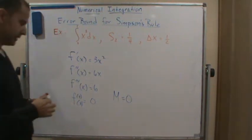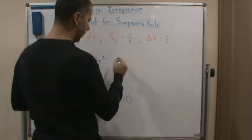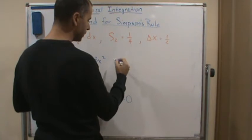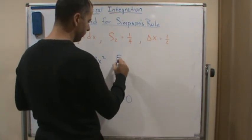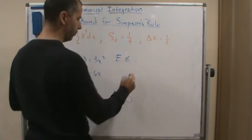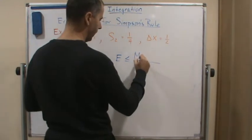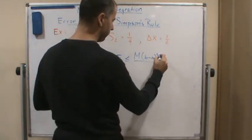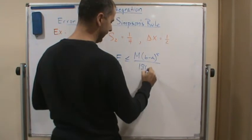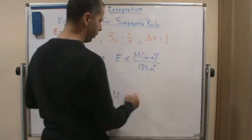So if we take our error, the maximum error has to be less than M times (b-a) to the fifth over 180n to the fourth.